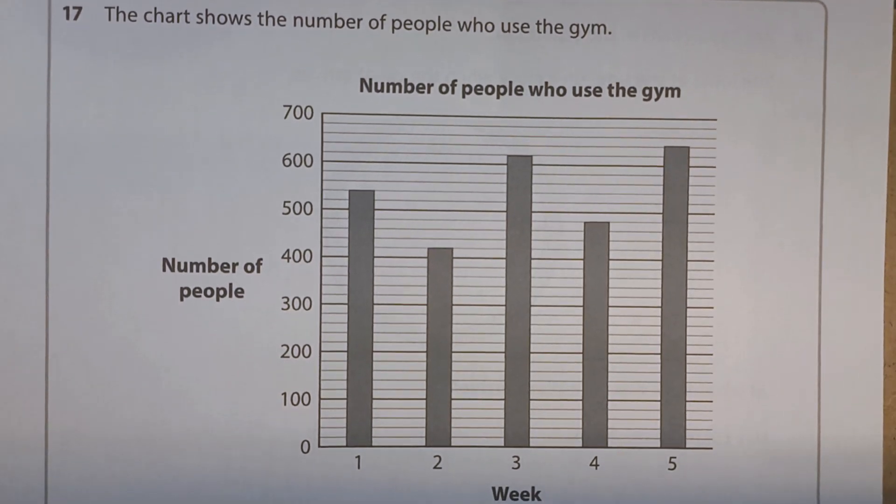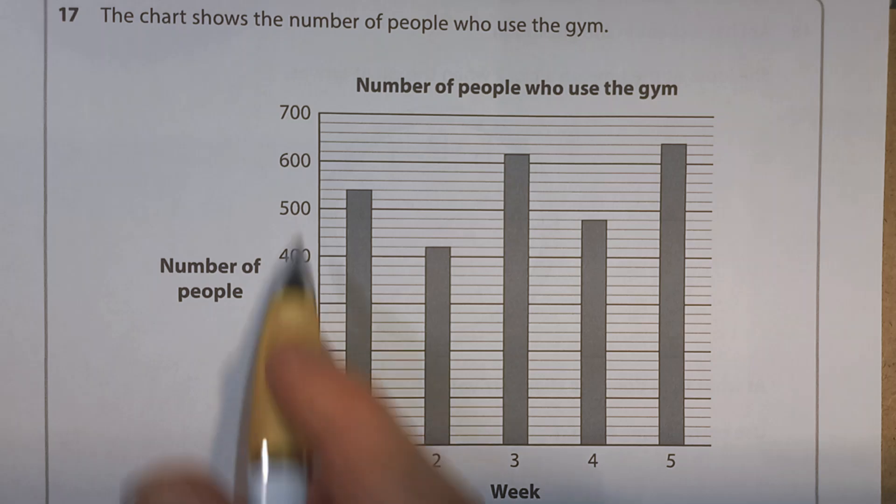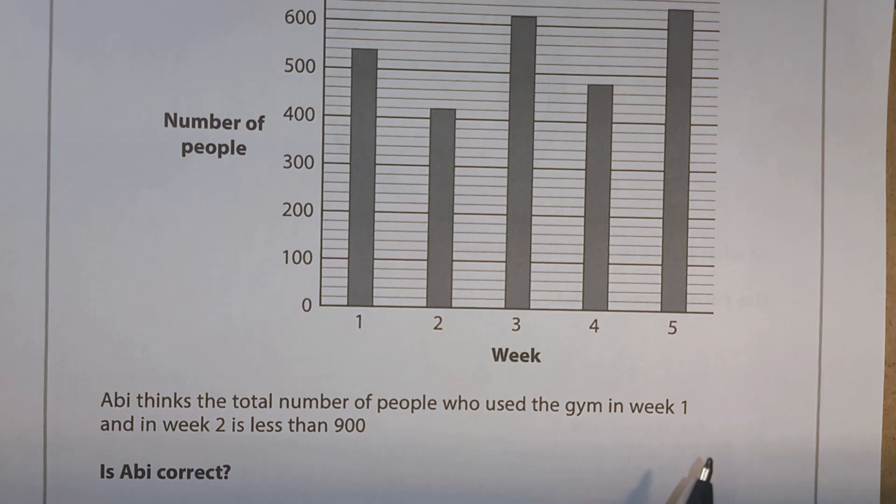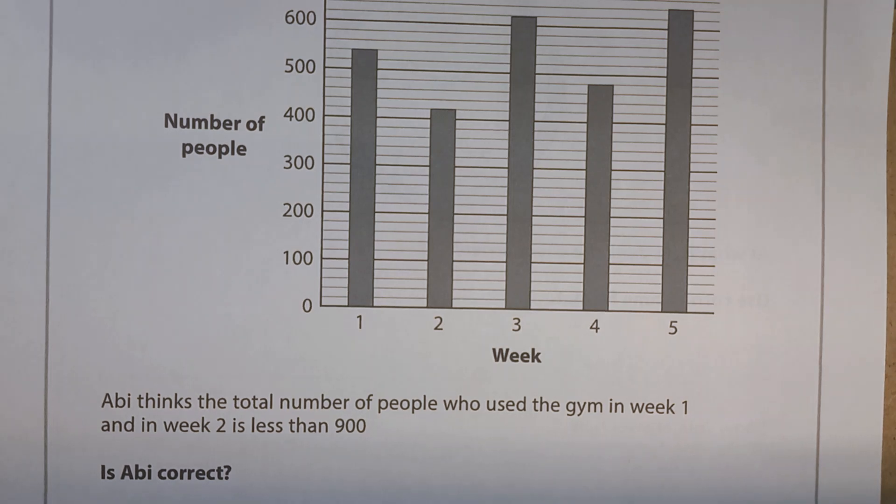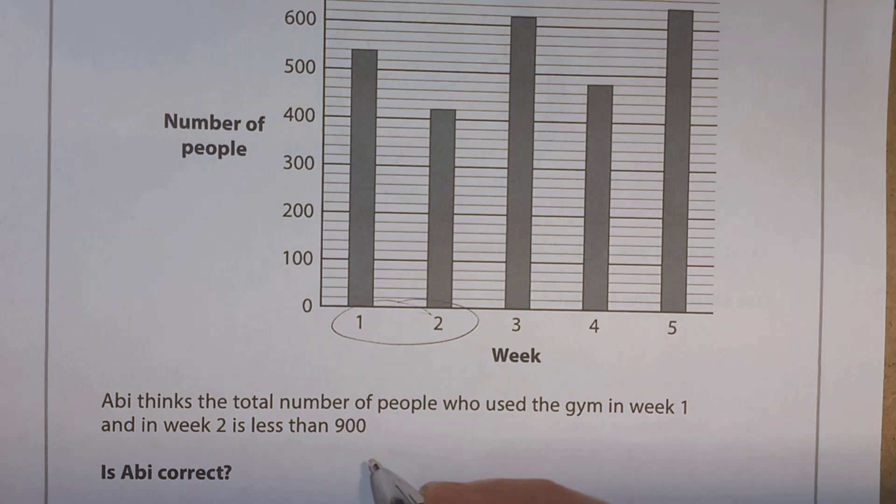Question 17. The chart shows the number of people who use the gym. Okay, we've got a nice chart there. Number of people going up the side. We've got a week along the bottom. Abbey thinks the total number of people who use the gym in week one and in week two is less than 900. Is Abbey correct? So we want to know the total of week one and week two.